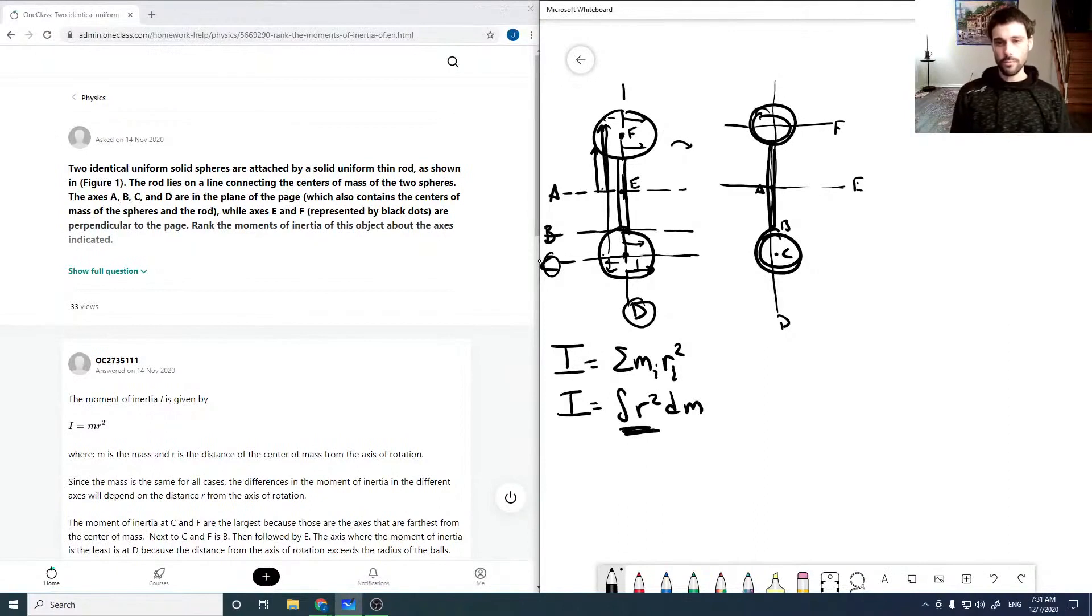We can start to rank, so D is going to be our smallest. We already said that C is going to be our highest and F is going to be equal to it.